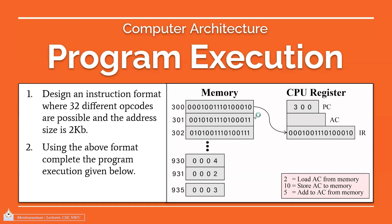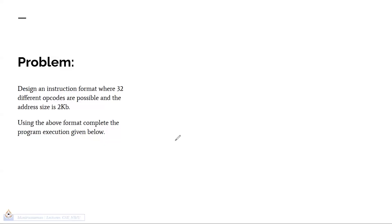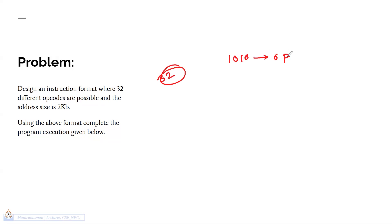We have to answer the first question. The first question is that we have to represent 32 different opcodes. To do this opcode, we have to represent this operation as a binary number. What operation is happening here?